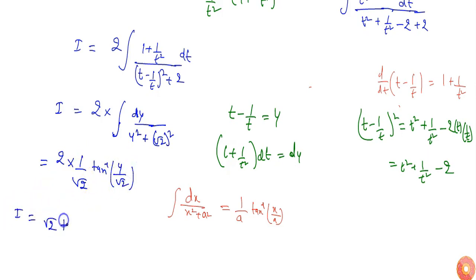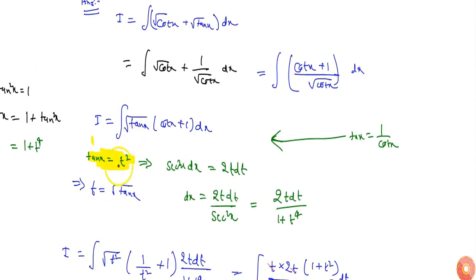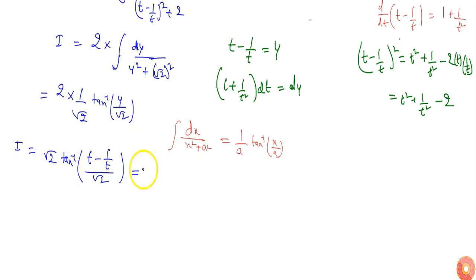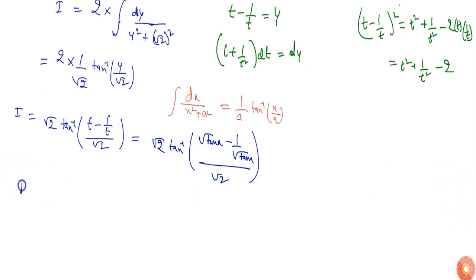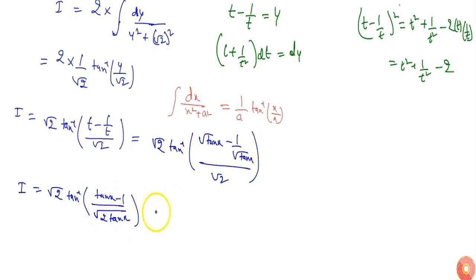So I equals root 2 times tan inverse of (t minus 1 by t) by root 2. Since from the substitution tan x equals t², we have t equals root(tan x), so I can write root 2 times tan inverse of (root(tan x) minus 1 by root(tan x)) divided by root 2. Solving this gives I equals root 2 · tan inverse((tan x minus 1) by root(2 tan x)) plus C, since it is indefinite integration.